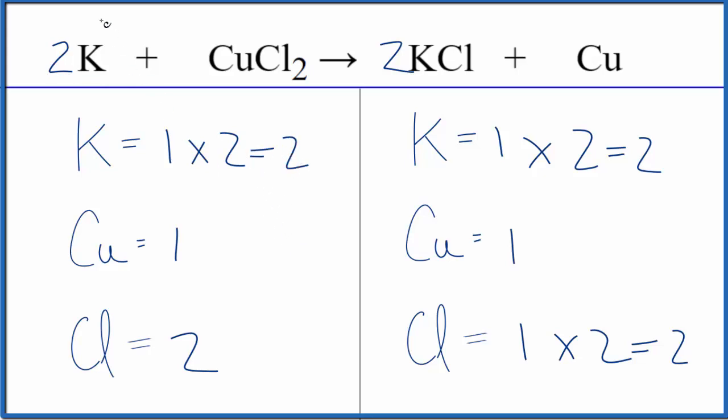If you wanted to write the states, that would look like this. And again, the type of reaction is single displacement. The potassium is displacing the copper in the CuCl2.